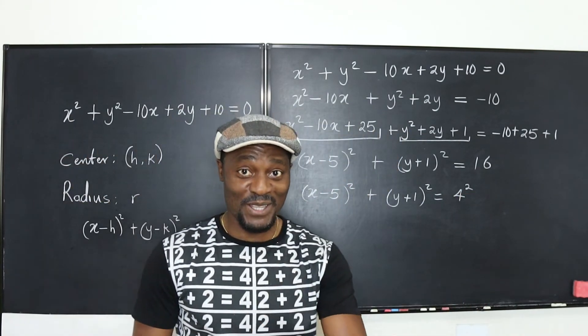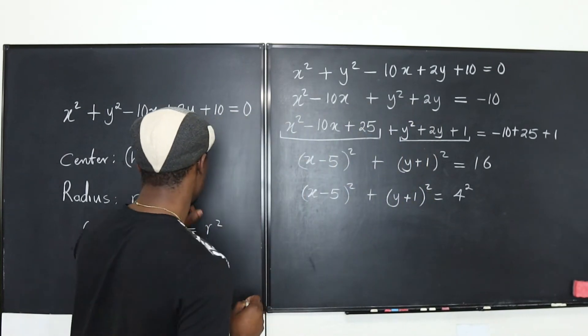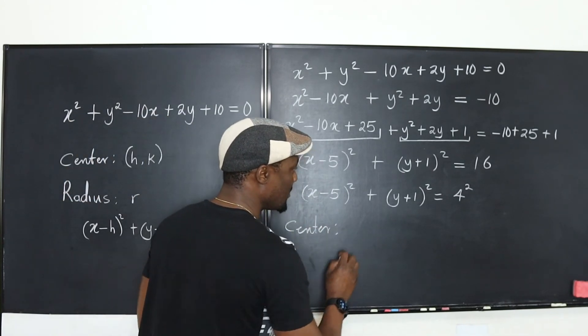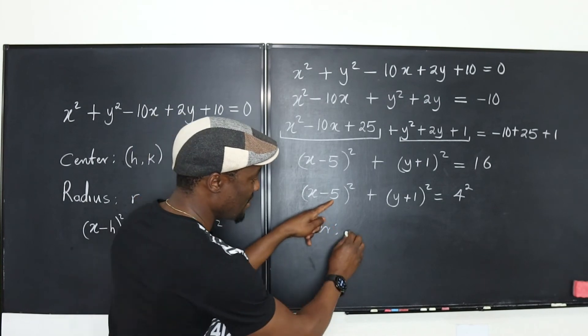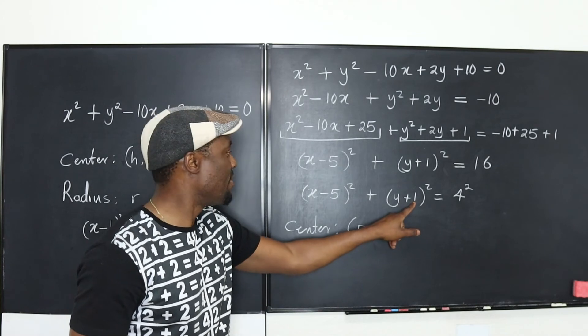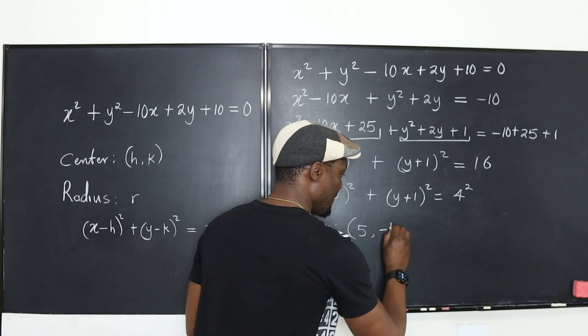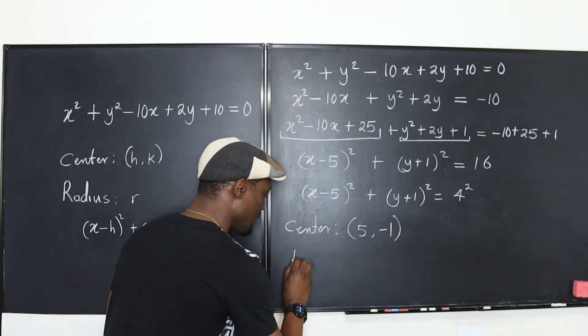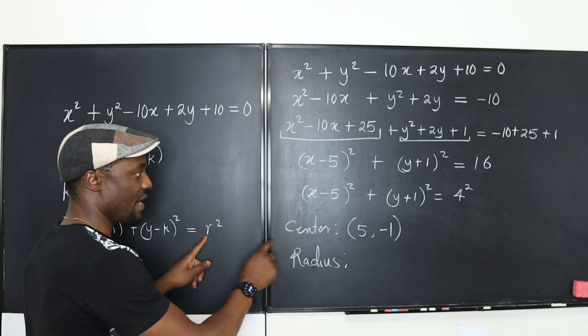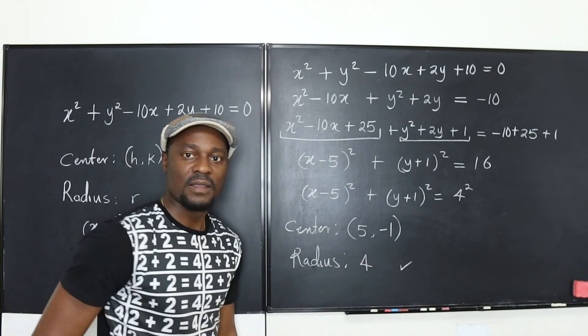We have answered the question. The question says what is the center and what is the radius? Obviously I can tell what the center is. The center is the point (5, -1). I can't say 1 because remember this has to be y minus, so it has to be -1 here. And what is the radius? The radius is r, whatever is squared here. It's 4.